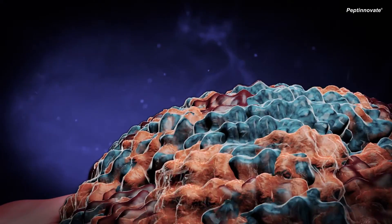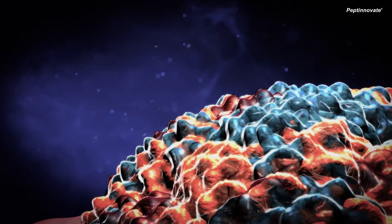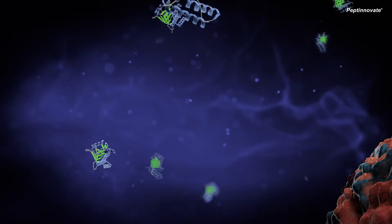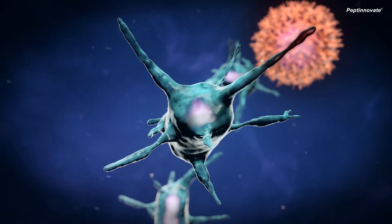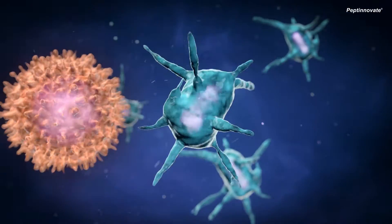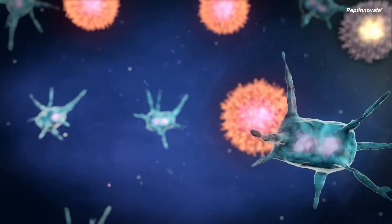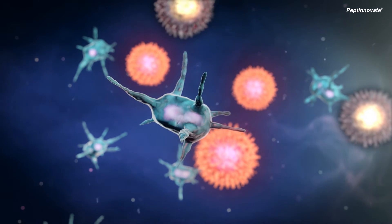Following this, tuberculosis bacteria secrete unique bacterial proteins from the granuloma to the surrounding lung environment. These proteins have been shown to have anti-inflammatory and immunomodulatory properties and prevent further attacks by the host's immune cells.